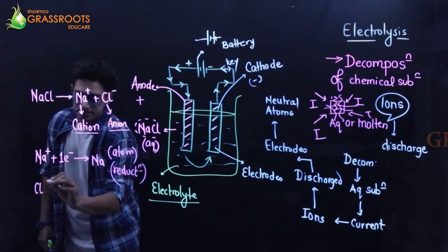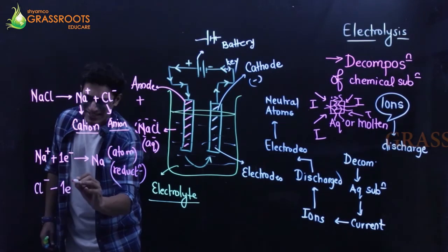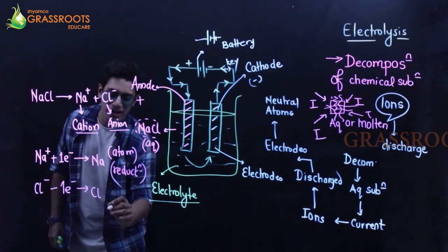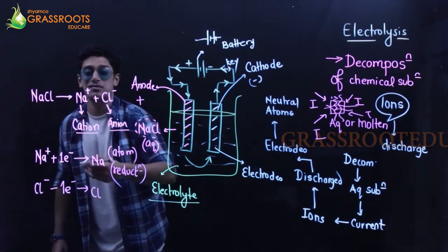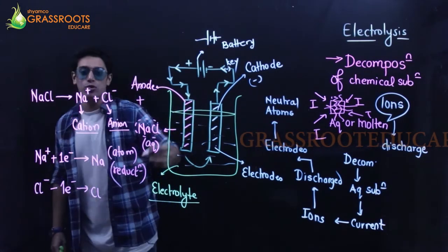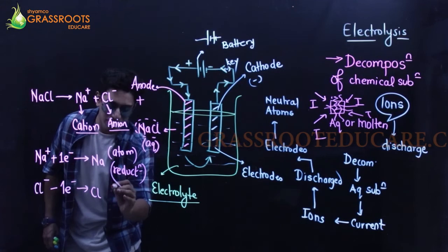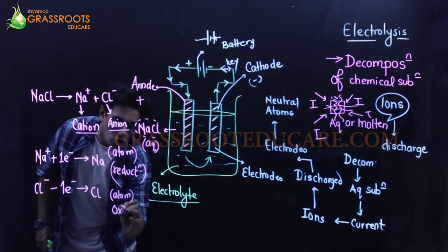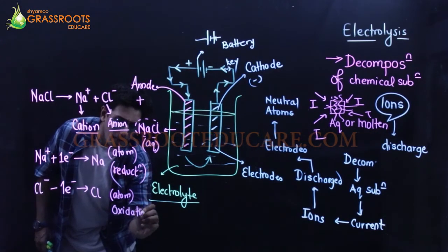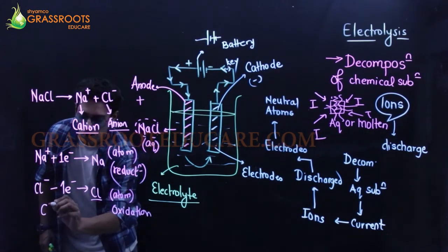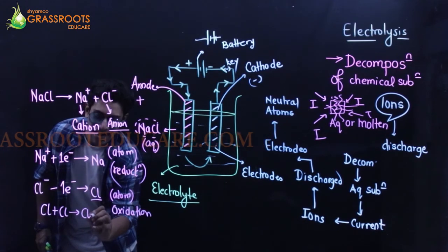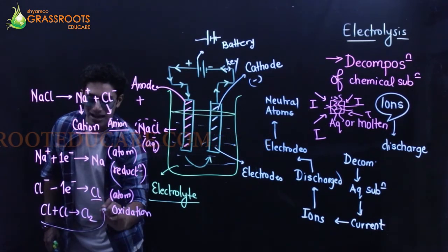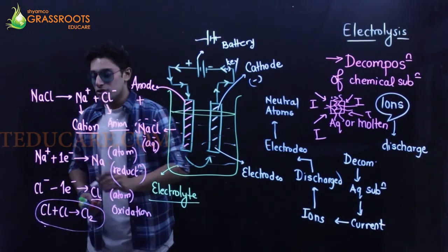The chloride anion loses an electron to the anode, forms chlorine atom, and this process is called oxidation. Remember one thing - chlorine can't ever be alone, it is a diatomic molecule, so this step is essential.